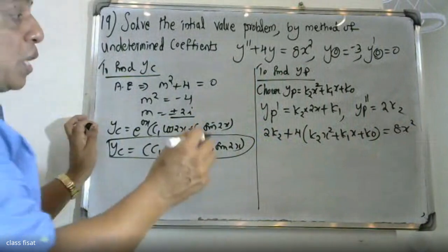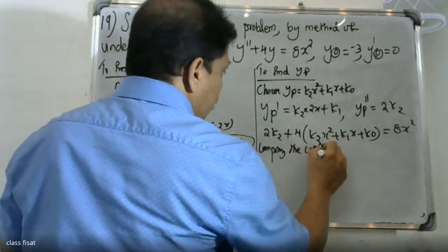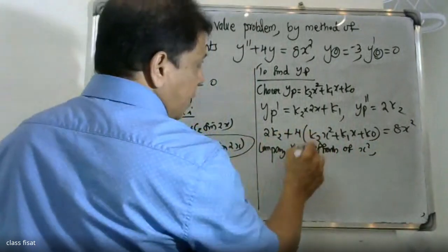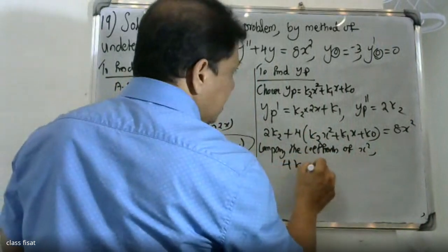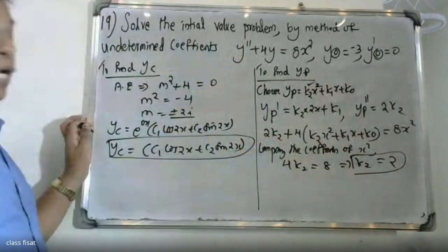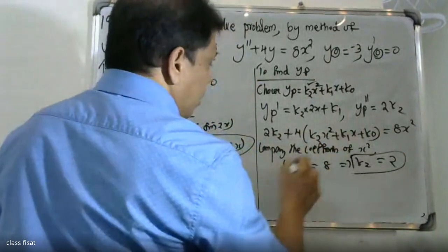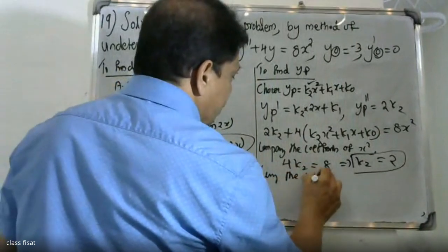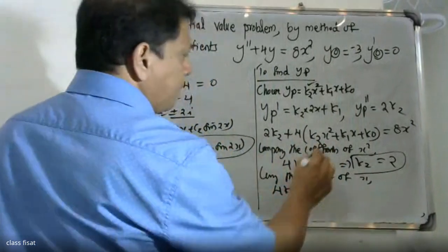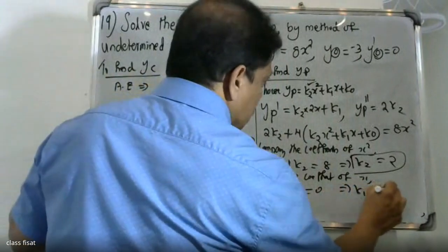Comparing the coefficients of x²: the x² coefficient gives 4k2 = 8, so k2 = 2. Comparing the coefficients of x: the x coefficient gives 4k1 = 0, so k1 = 0.